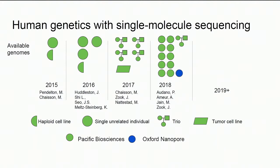A perspective about where things have been going is that the number of human genomes available has been about doubling since 2015. We had about one and a half human genomes — I say a half because one sequenced in 2015 was just a haploid cell line — to about four trios available a couple of years ago, and now around ten unrelated individuals. I'll talk later about the genomes being sequenced in 2019 and beyond.